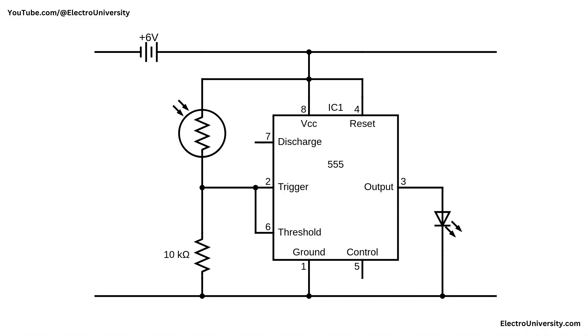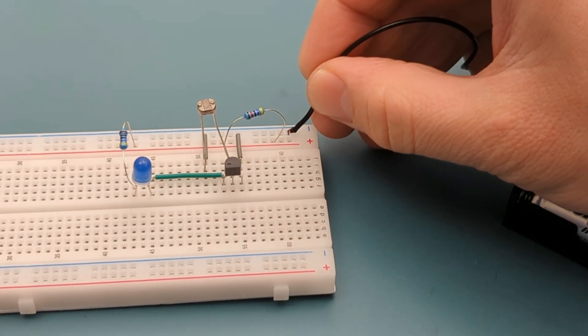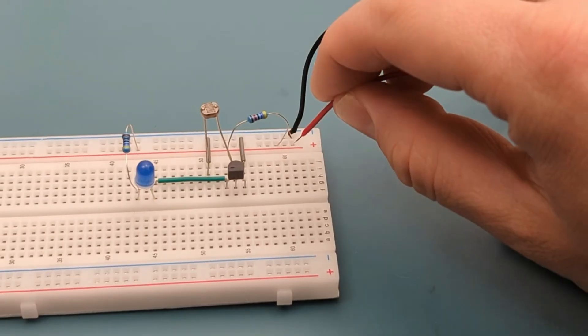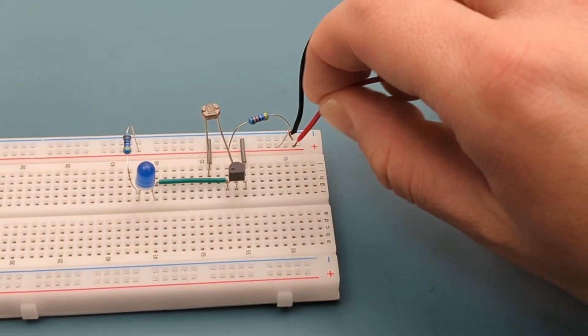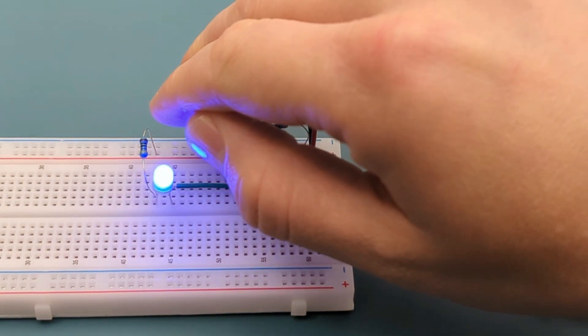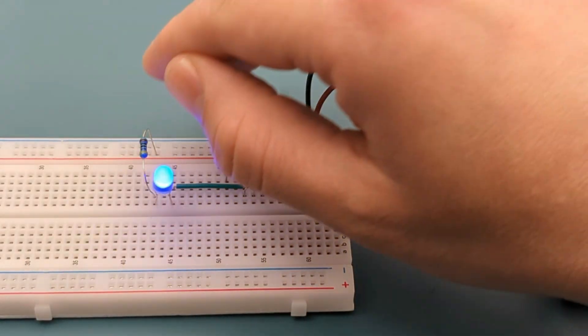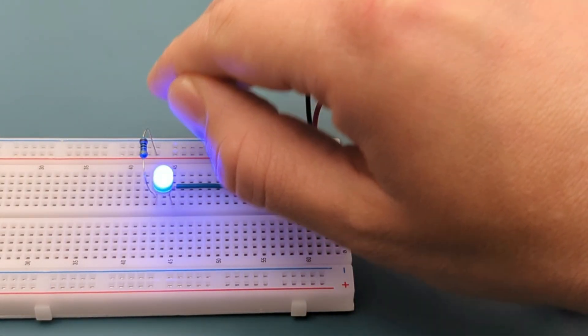I hope this video has shown you how to make a streetlight circuit with a 555 timer. Would you like to see another approach to this? An alternative to using the 555 timer is a circuit based on a BC547 transistor. It performs the same basic function, turning the LED on in the dark and off in the light, but uses the transistor as a switch instead of the 555 timer. Check out this other video linked in the description below.